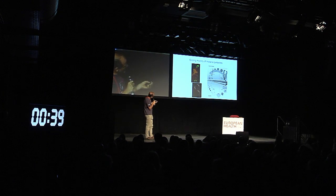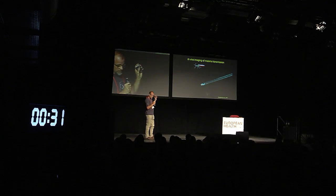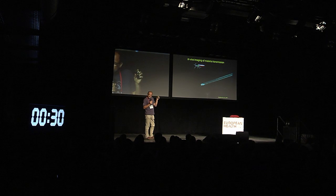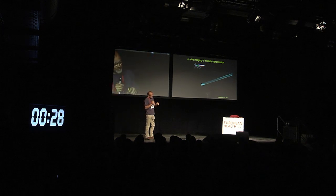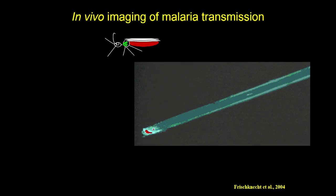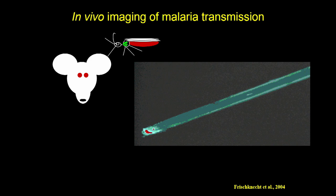And why that is so important — we're studying the process of gliding motility, as I'll show you. You can see here the proboscis, the part of the mosquito that is sticking in your skin, and the mosquito is salivating these parasites.